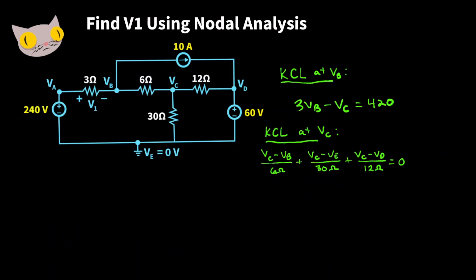Now for our equation for the current at VC, same thing. Let's multiply each term by the lowest common multiple, the lowest common multiple for 6, 30, and 12. That's going to be 60. Now we're left with this. We replaced VE with 0 volts, we replaced VD with 60 volts. And simplifying further, we're going to get negative 10VB plus 17VC is equal to 300.